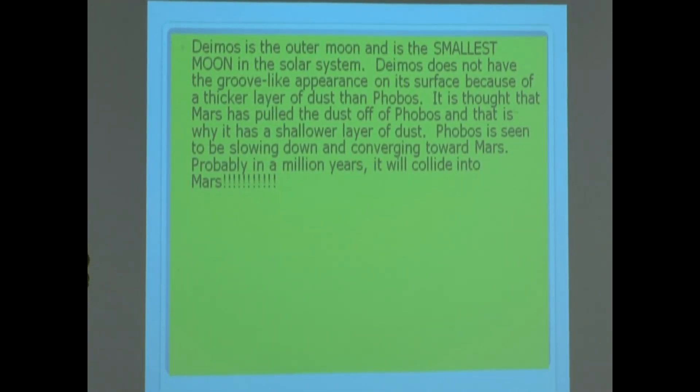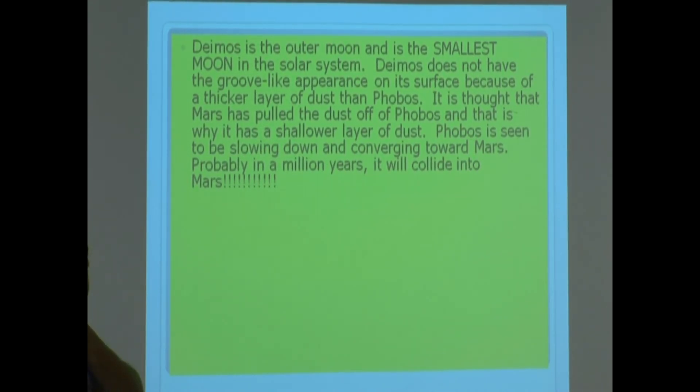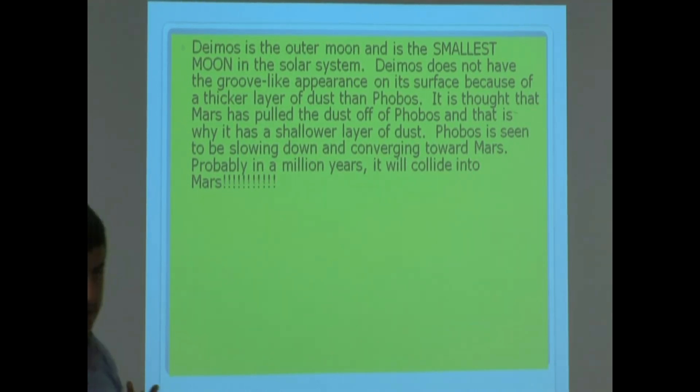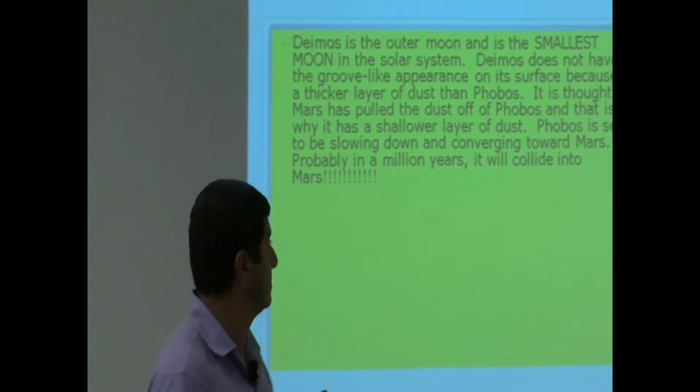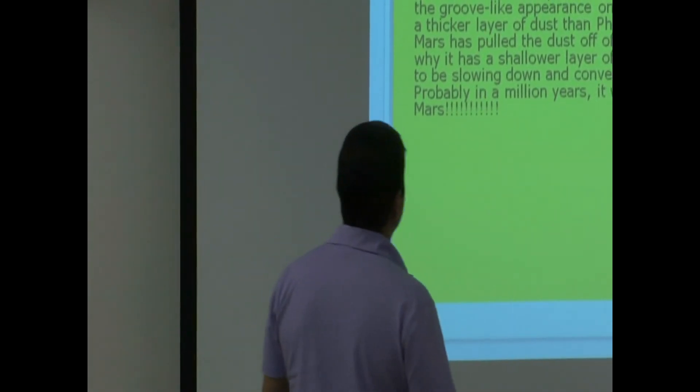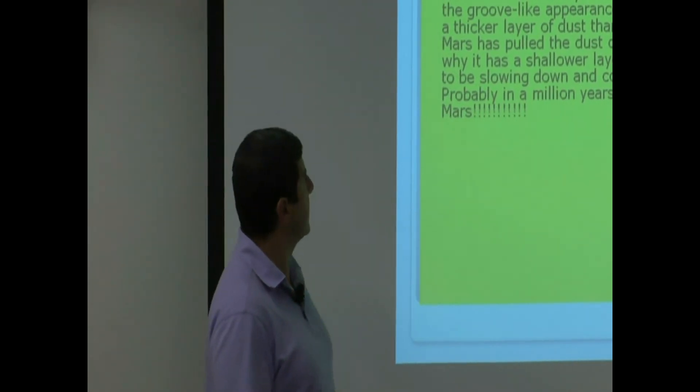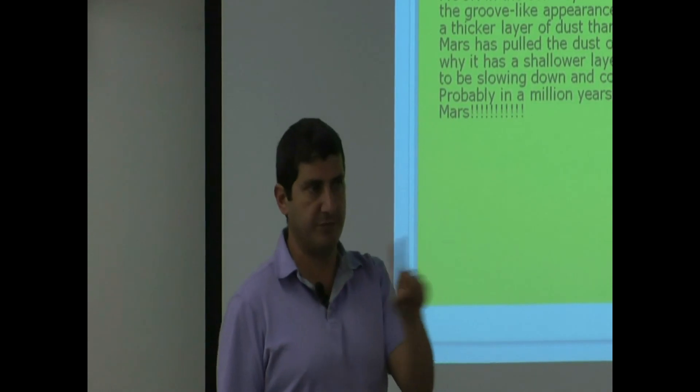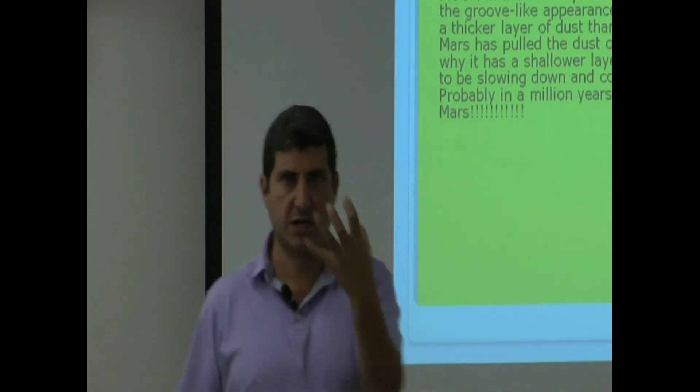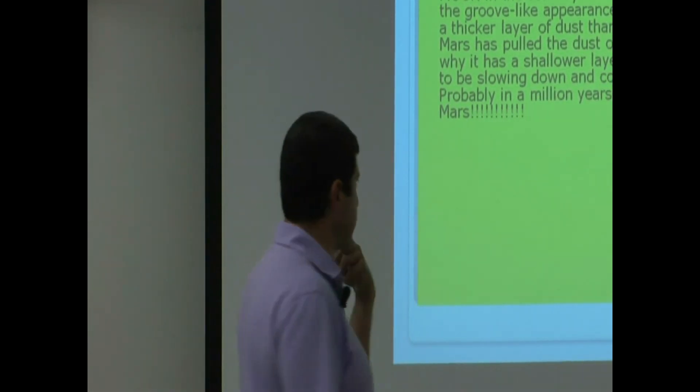Deimos is the outer moon and is the smallest moon in the solar system. Deimos does not have the groove-like appearance on its surface because of a thicker layer of dust than Phobos. So its layer of dust is even thicker than Phobos. It is thought that Mars has pulled the dust off of Phobos, and that is why it has a shallower layer of dust. You see why? That's why Phobos is closer to Mars. Mars pulls that dust layer off.